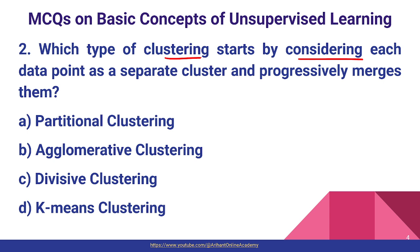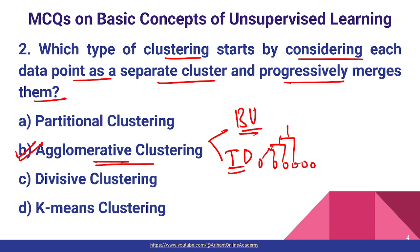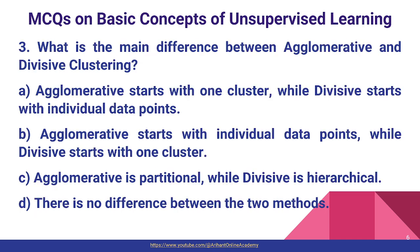Question number two: which type of clustering starts by considering each data point as a separate cluster and progressively merges them? Initially each and every data point is separated and they keep merging one by one. Such an algorithm is considered under agglomerative clustering. Agglomerative clustering has two types — bottom-up and top-down. In bottom-up, each individual data point is treated as a separate cluster and after each iteration they are merged. So agglomerative clustering is the correct answer.